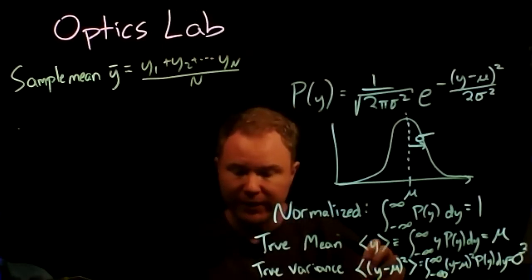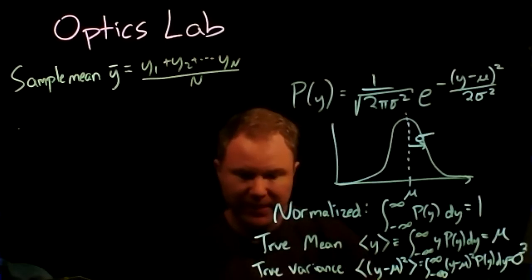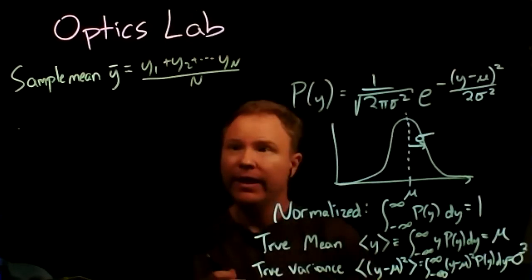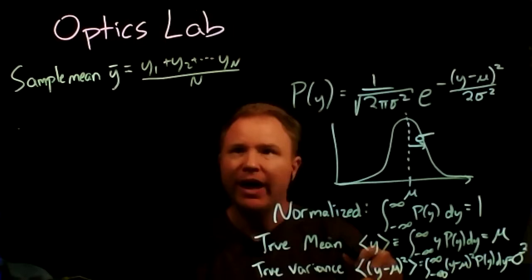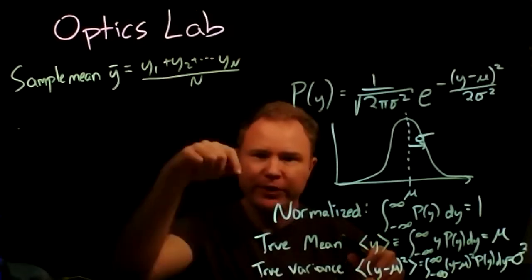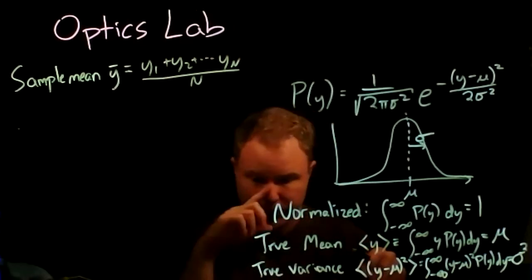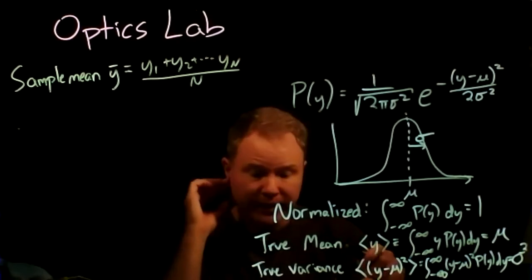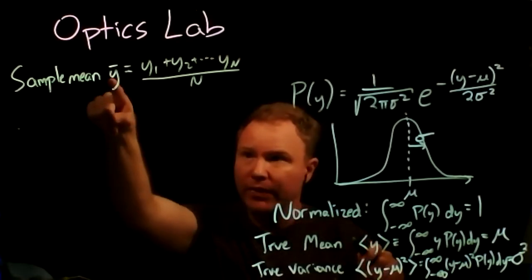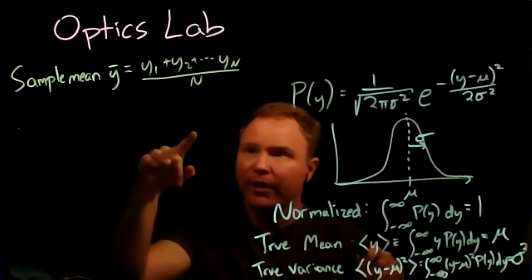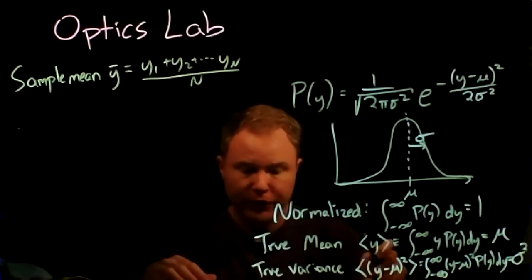You can use this sample mean to estimate your true mean. That means that on average, if you did this procedure many times — made five measurements and took the average, made another five and averaged, and so on — the expectation value of ȳ should converge to the true mean μ.